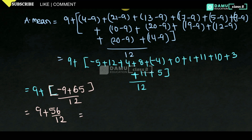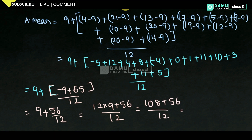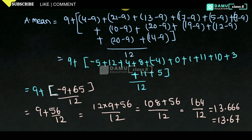Taking LCM: 12 into 9 plus 56 by 12. 12 nines are 108, so 108 plus 56 by 12. 108 plus 56 equals 164 by 12. So 164 divided by 12 gives 13.666, which rounds to 13.67. Therefore, the arithmetic mean is 13.67 in the first case.